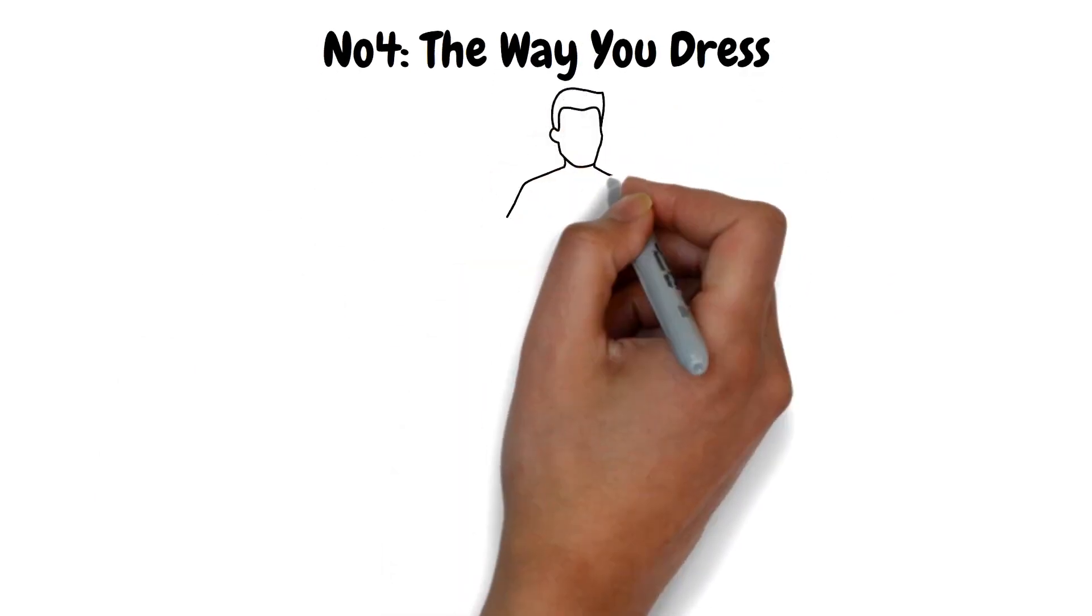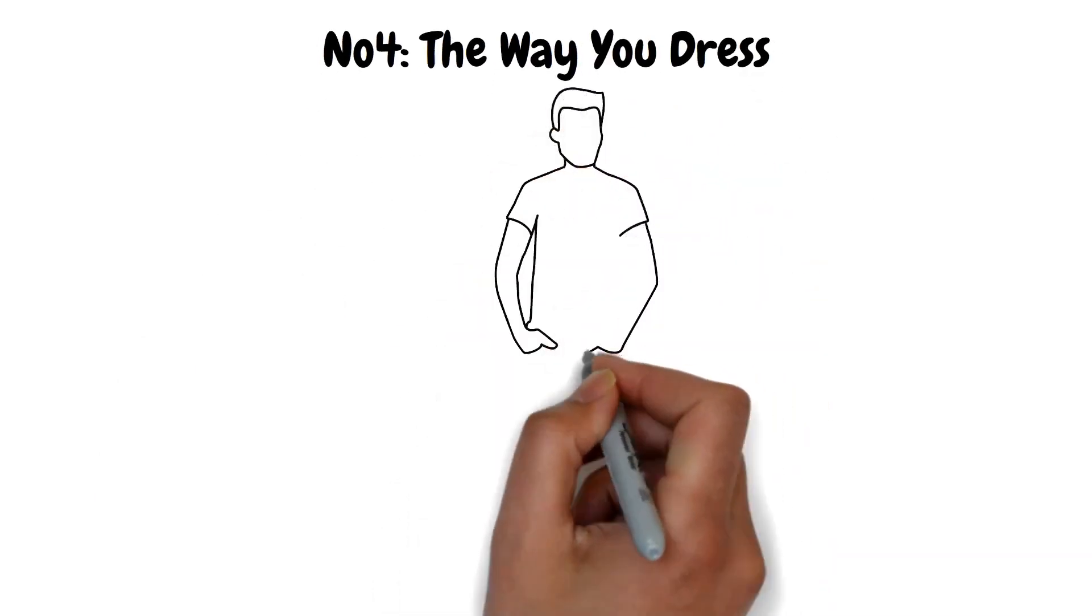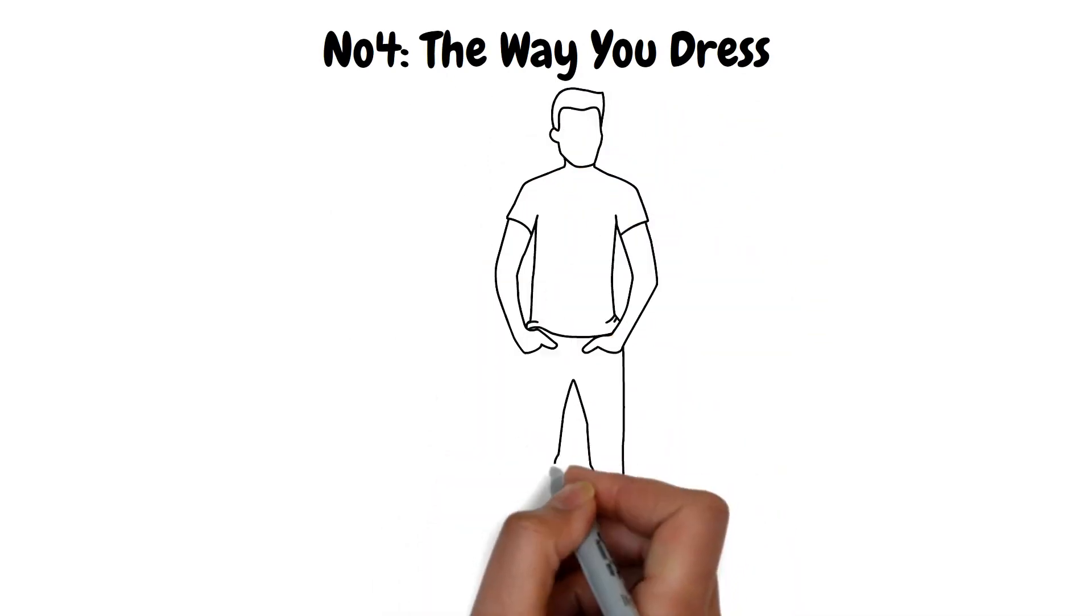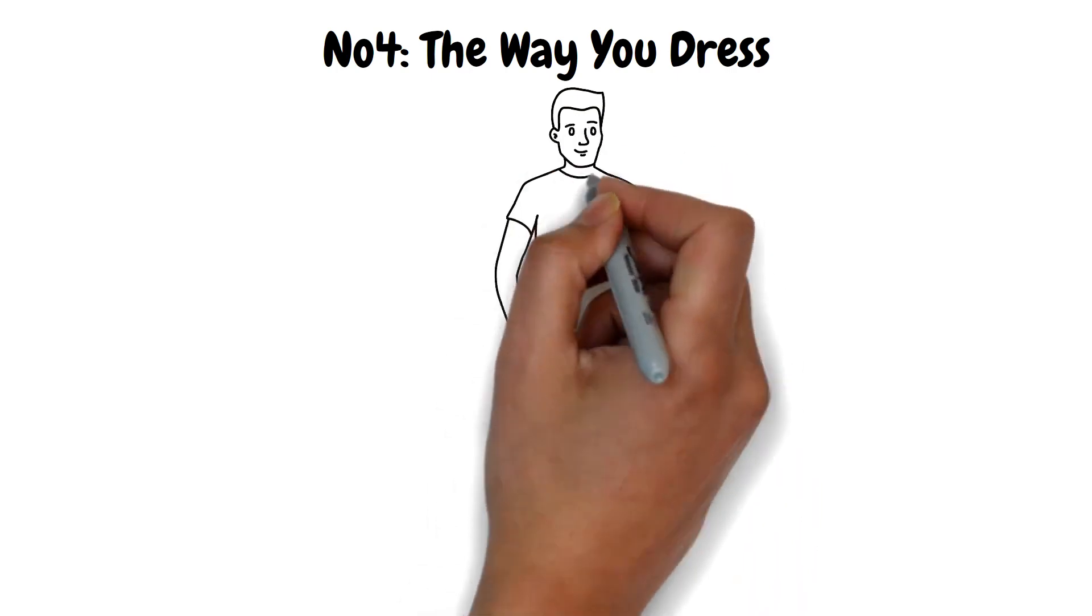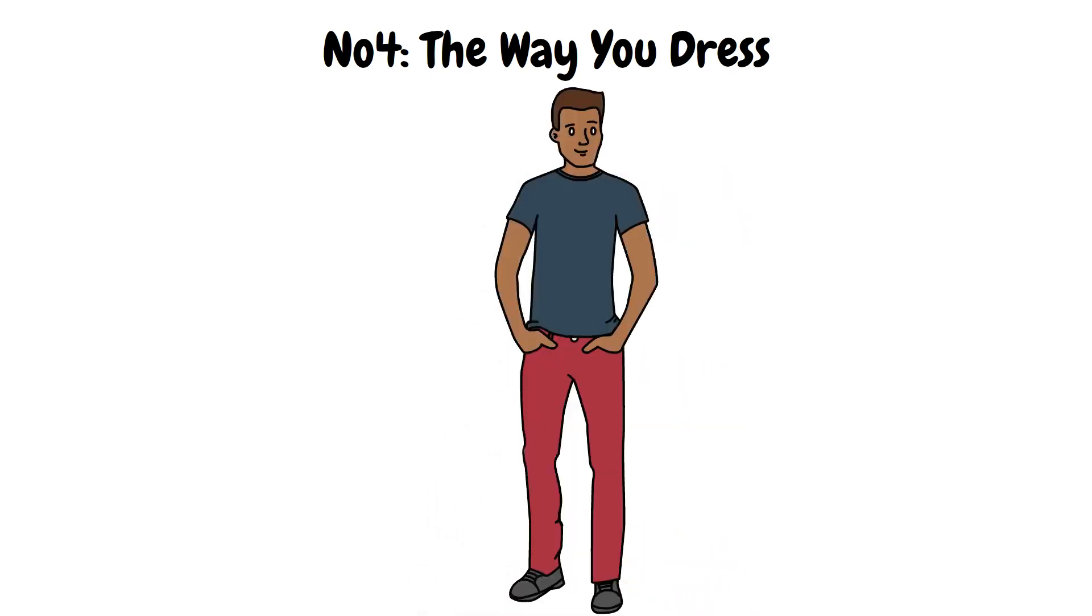The Way You Dress. Choice of clothes is another thing that reveals much about a person without even talking to them. People often use clothes to express themselves. A person who dresses casually usually has an easy-going personality and prefers comfort over impressing others with their style.